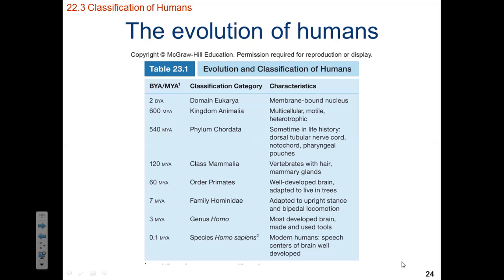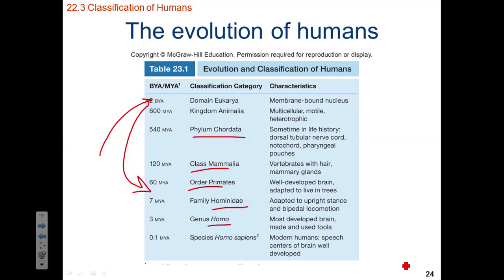These organisms started out a long time ago not resembling current modern human beings at all. Looking approximately 2 billion years ago, we find that the modern domain of eukarya first established itself within the fossil record. After that we find animals, then spinal cords, then mammals, then primates. From 2 billion years ago to 60 million years ago, we have the appearance of a primate. Then we have the hominidae appear, and then genus Homo within that family.